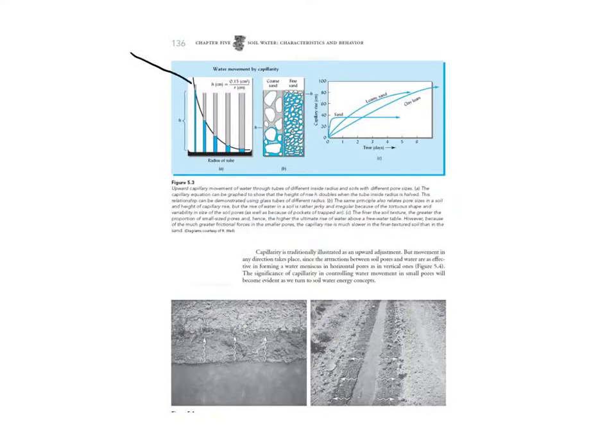When you're looking here, what you see is that the smaller the diameter—we're going to use the radius of the tube because we calculate a height of rise using a radius—so the smaller that opening is,